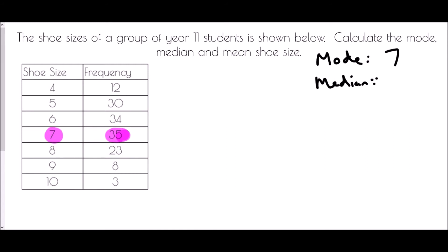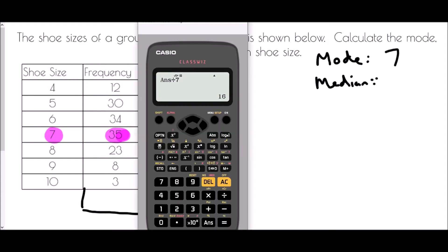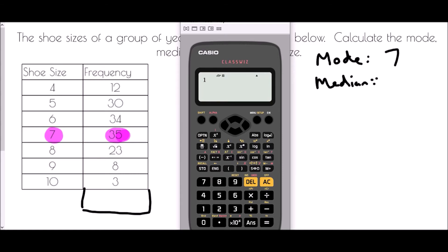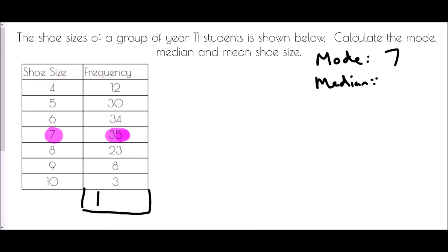For the median, we first need to know how many students were asked. We add all the frequency values together using a calculator: 12 plus 30 plus 34 plus 35 plus 23 plus 8 plus 3 equals 145 students. Using our trick: 145 plus one is 146, divided by two is 73. The median is not 73 — that would be a strange shoe size — but it means we need the 73rd piece of data.